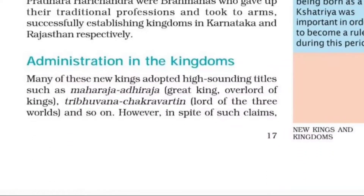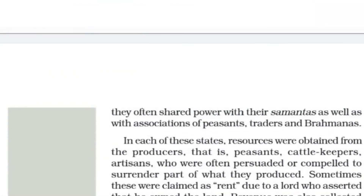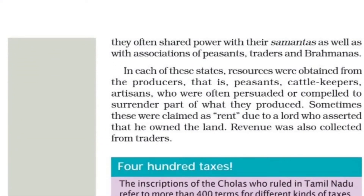Many of these new kings adopted high-sounding titles such as Maharajadhiraj — Great King, Overlord of Kings — Tribhuvan Chakravartin, Lord of Three Worlds, and so on. However, in spite of such claims, they often shared power with their Samantas as well as with associations of peasants, traders, and Brahmans.